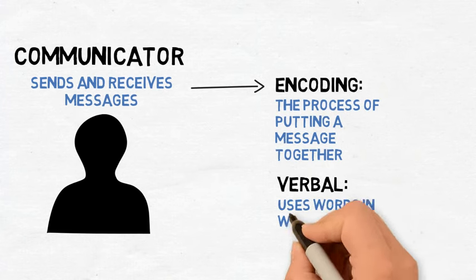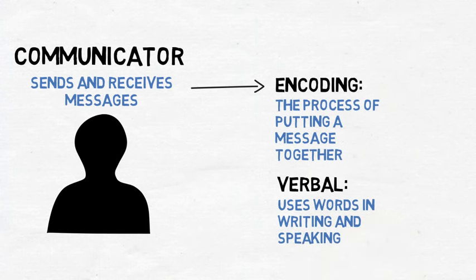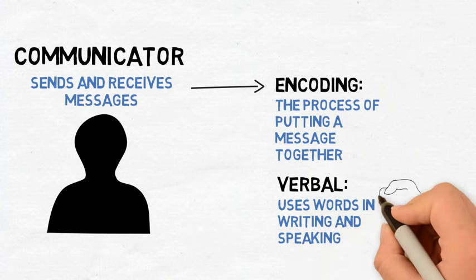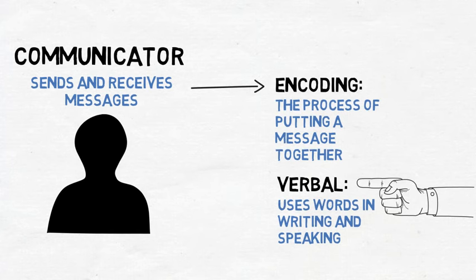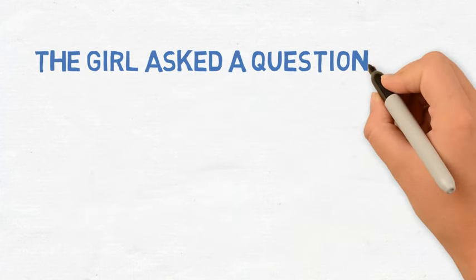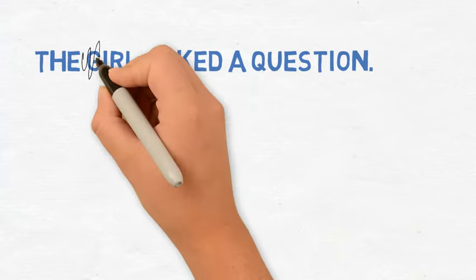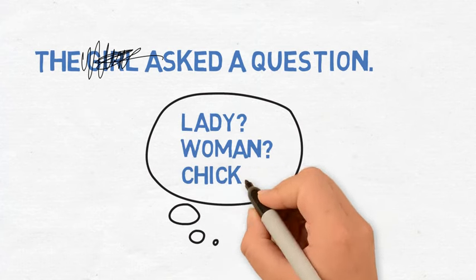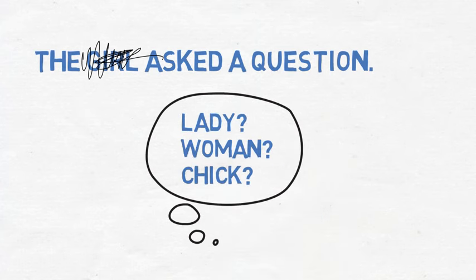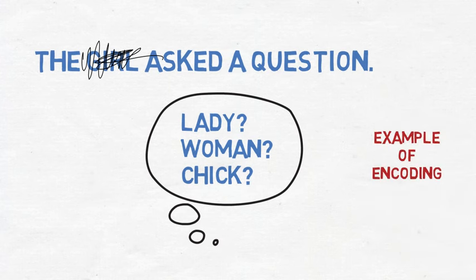Humans use verbal communication whenever using words in writing or speaking. Verbal communication includes sign language too, as sign language uses specific movements that convey meanings of specific ideas, objects, thoughts, and feelings. Have you ever taken time to carefully write, then rewrite a sentence to ensure you're being as clear as possible? Have you ever been careful to choose just the right words before speaking to another individual? Carefully considering which words to use, and the order of their use, in any given situation, is one example of encoding.